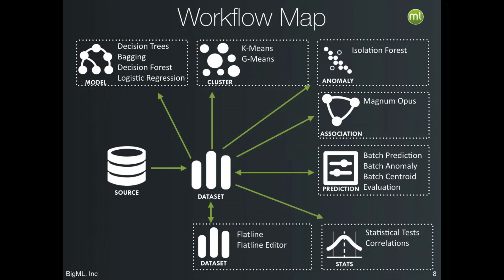From datasets you can move into modeling with decision trees, forests, or logistic regression; into unsupervised tasks like clustering, anomaly detection, or association discovery; or into data discovery with statistical tests and correlations. We also have batch outputs, where you build a model and run a dataset through it to create a new dataset. And at the bottom, the Flatline Editor allows you to do programmatic transformations — creating new features, filtering, or cleaning your data.